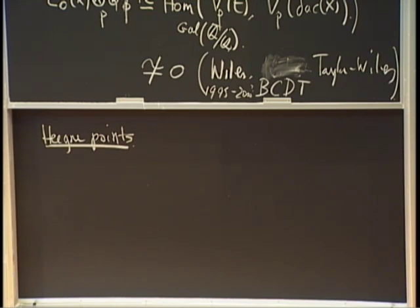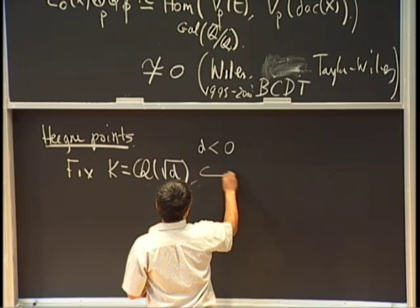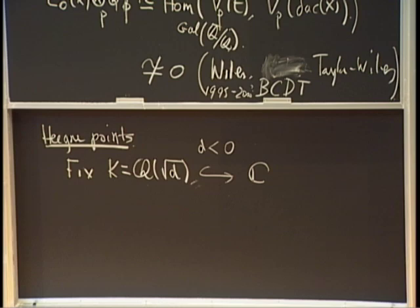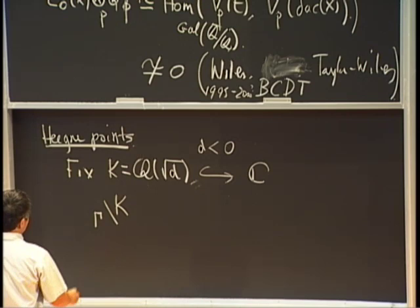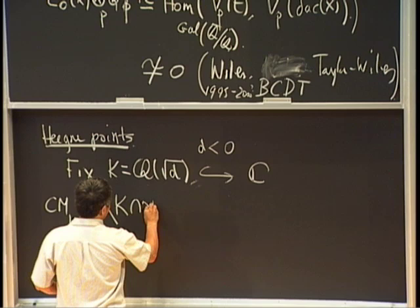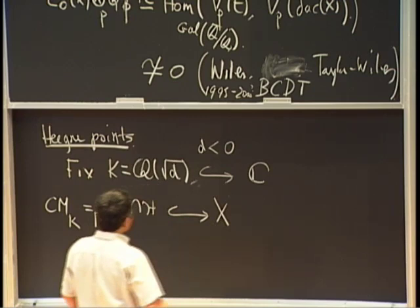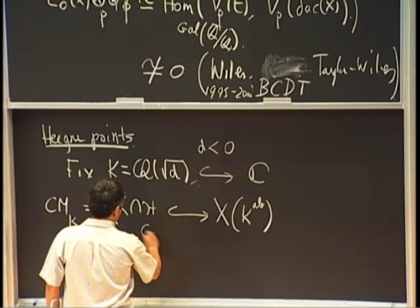After Faltings and Wiles, we know that any elliptic curve is parametrized by a modular curve. So if you want to construct a point on an elliptic curve, it suffices to construct a point on the modular curve. That's Heegner's idea. He fixed a quadratic field K = Q(√D) with D < 0, embedded in the complex numbers. Then instead of considering the upper half-plane, you replace it with the CM points — the imaginary quadratic points inside X. In fact, by CM theory, these CM points lie inside X(K^{ab}).